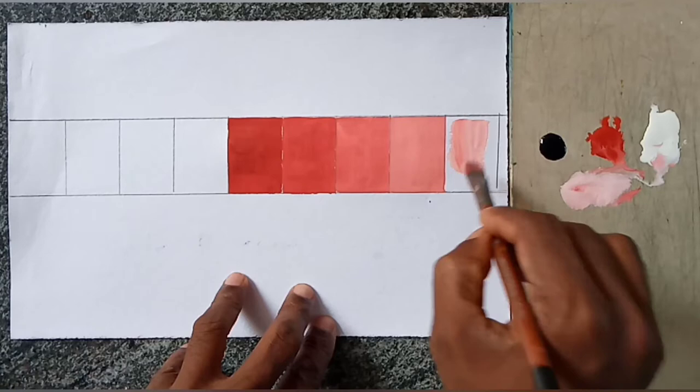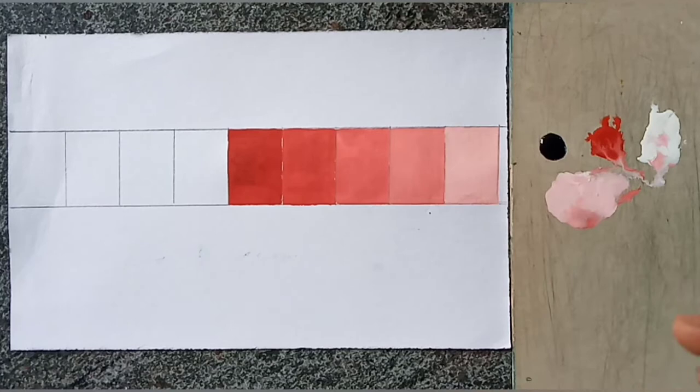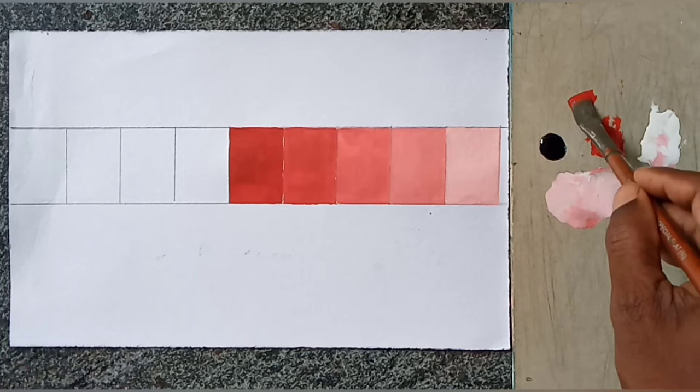So it will become very light color. Slowly. Now you see that - dark to light. So step by step, we reduce that color.